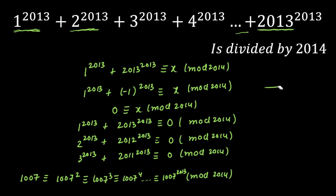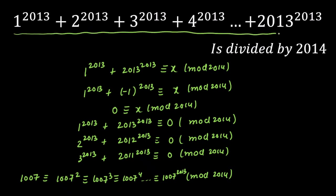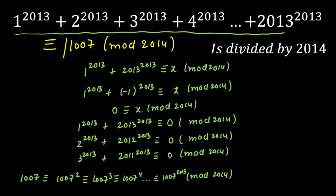Now focusing on the original question: when we divide the whole sum by 2014, every paired first-and-last, second-and-second-last term gives remainder 0. Only the middle term remains, giving remainder 1007. So the entire sum 1^2013 + 2^2013 + ... + 2013^2013 is congruent to 1007 (mod 2014). The answer is 1007.